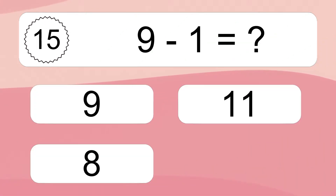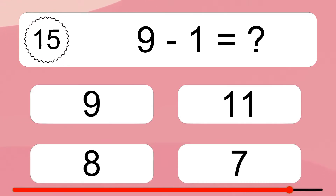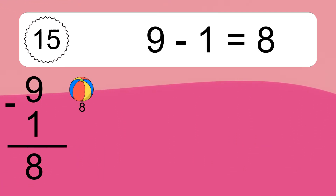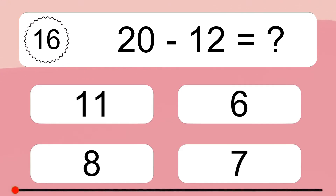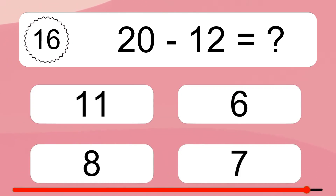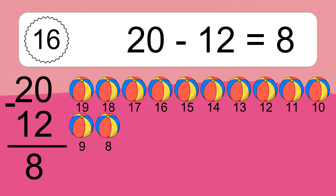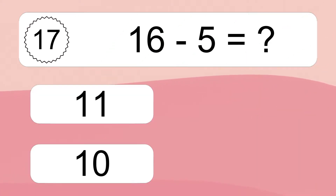9 minus 1 equals what? 9 minus 1 equals 8. Let's count it. 8. 20 minus 12 equals what? 20 minus 12 equals 8. Let's count it. 19, 18, 17, 16, 15, 14, 13, 12, 11, 10, 9, 8.